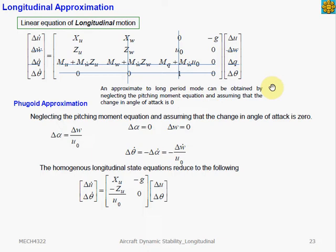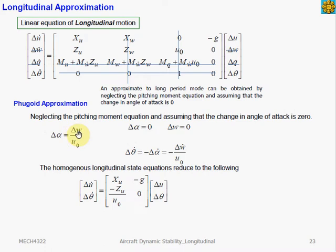For the Phugoid approximation, we assume that the motion occurs at constant angle of attack. We have discussed previously that the Phugoid mode of motion consists of significant variations between the pitch attitude theta and the airspeed, while the angle of attack remains constant. So, if we assume that the angle of attack is constant, then the change in the angle of attack is zero. The change in the force in the z-axis, delta W, is influenced by the change in the angle of attack by this equation. So, if the change in angle of attack is zero, then the change in the z-force is also zero. In the longitudinal equation of motion, we neglect the z-force equation, delta W, and we also neglect the pitching moment equation, delta Q.